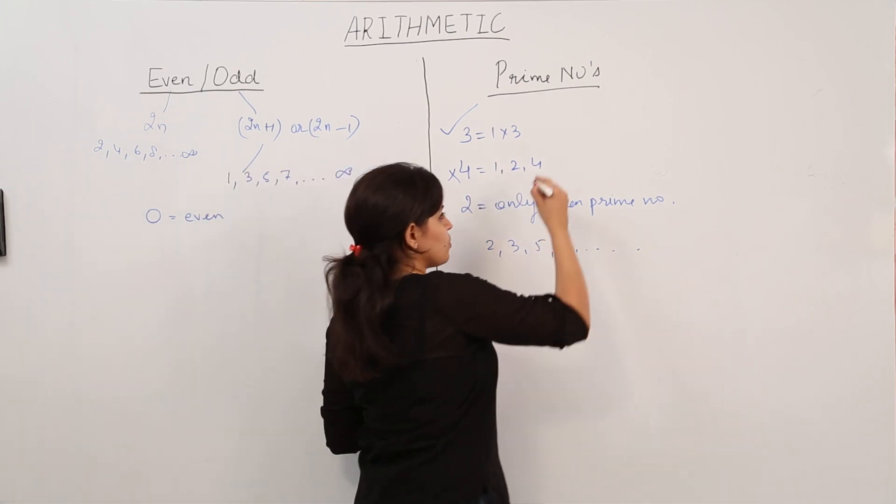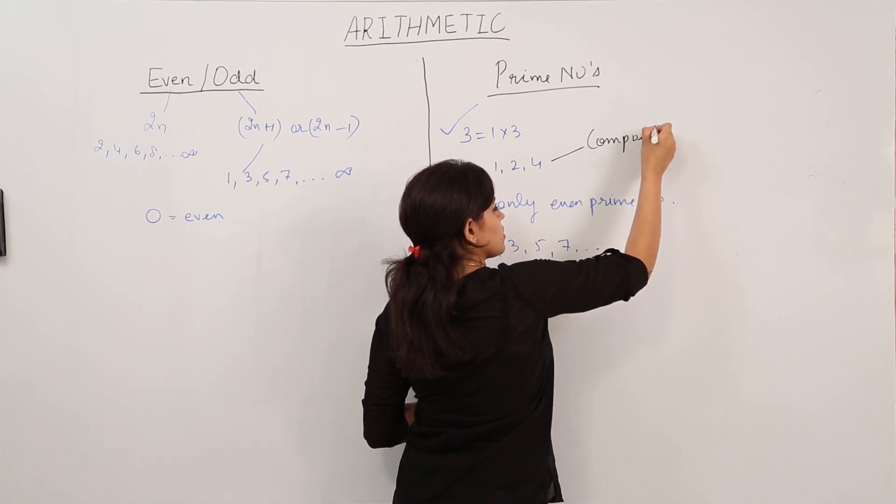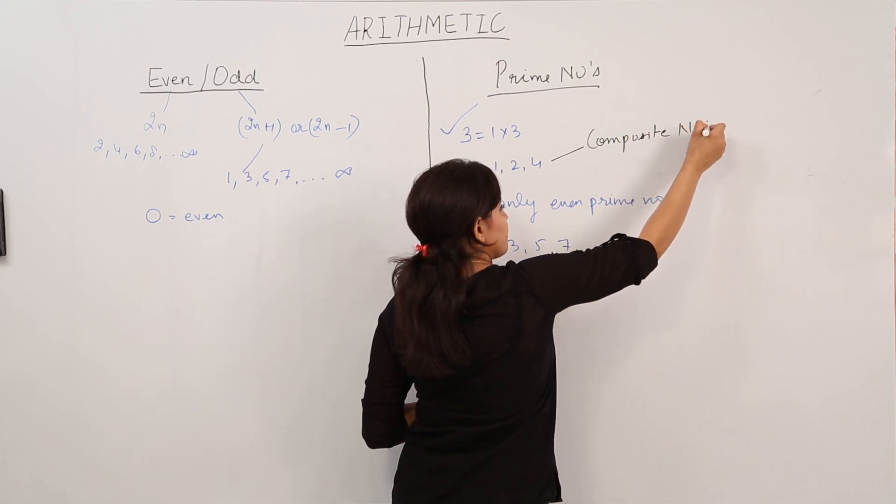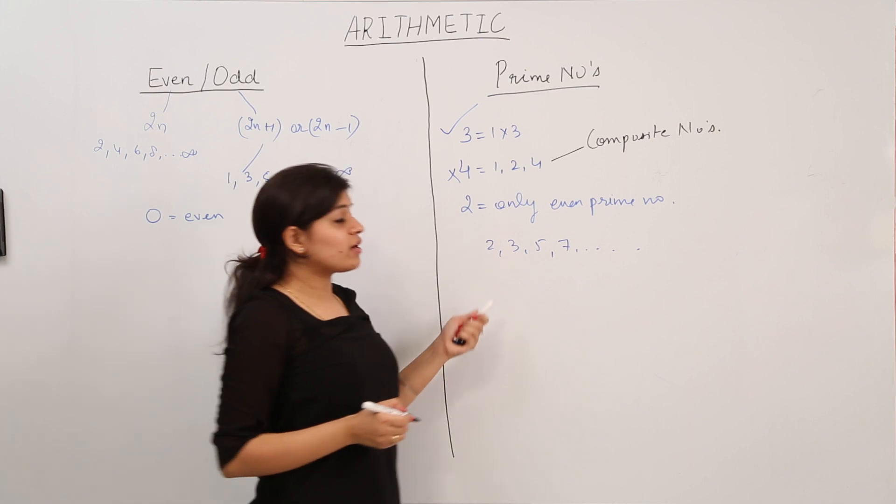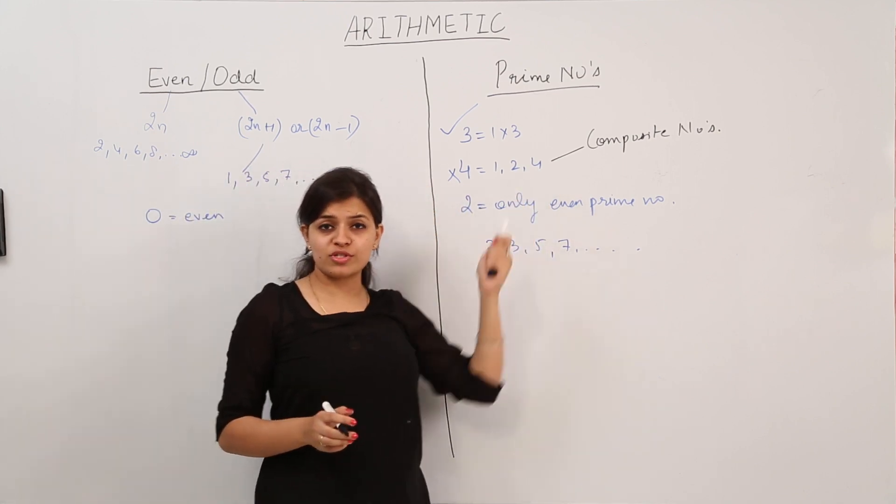So now we can easily define composite numbers. We can say that all those numbers which have more than two factors are known as composite numbers.